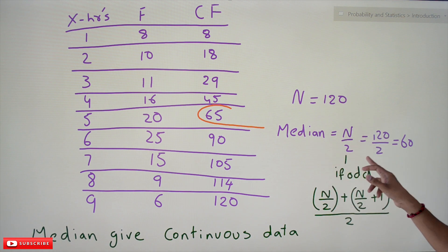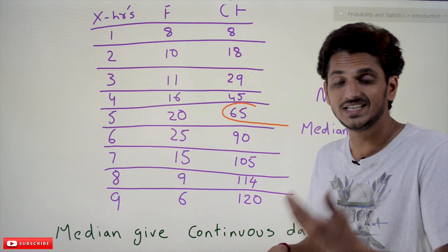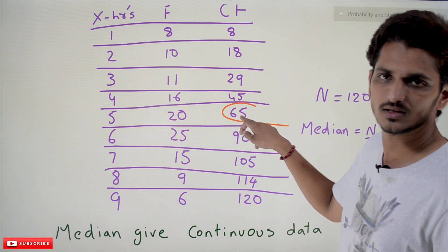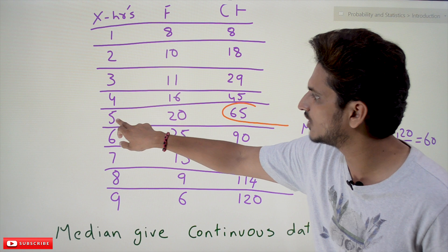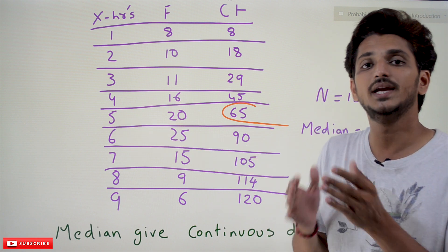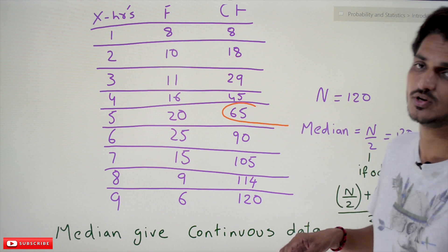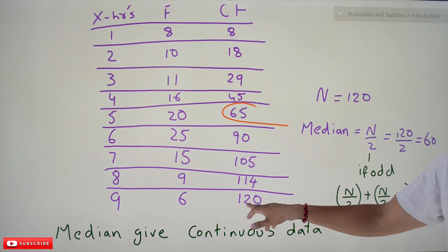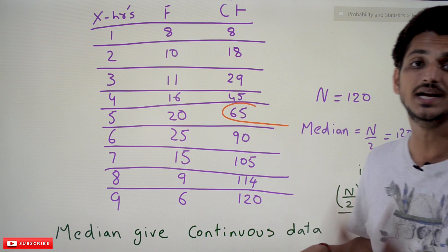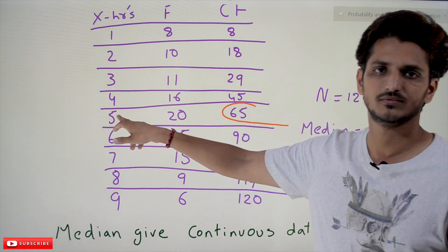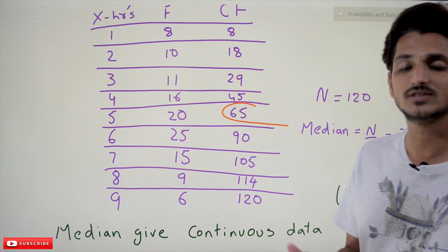Median = n/2 = 120/2 = 60. Where does 60 fall? The cumulative frequency goes 45, then 45 + 20 = 65. So 60 falls in the class with value 5. The median class is 5, meaning the median value is 5. On average, students study 5 hours a day — that is how we calculate the median value.